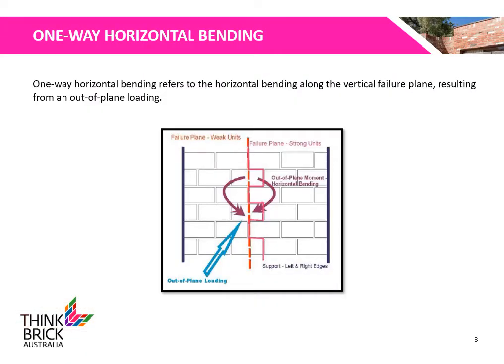One-way horizontal bending refers to the horizontal bending of a wall given an out-of-plane loading such as wind or earthquake loads. As shown in the diagram, horizontal bending occurs along the vertical failure plane that results from the out-of-plane loading. One-way horizontal bending also forms a component of two-way bending.